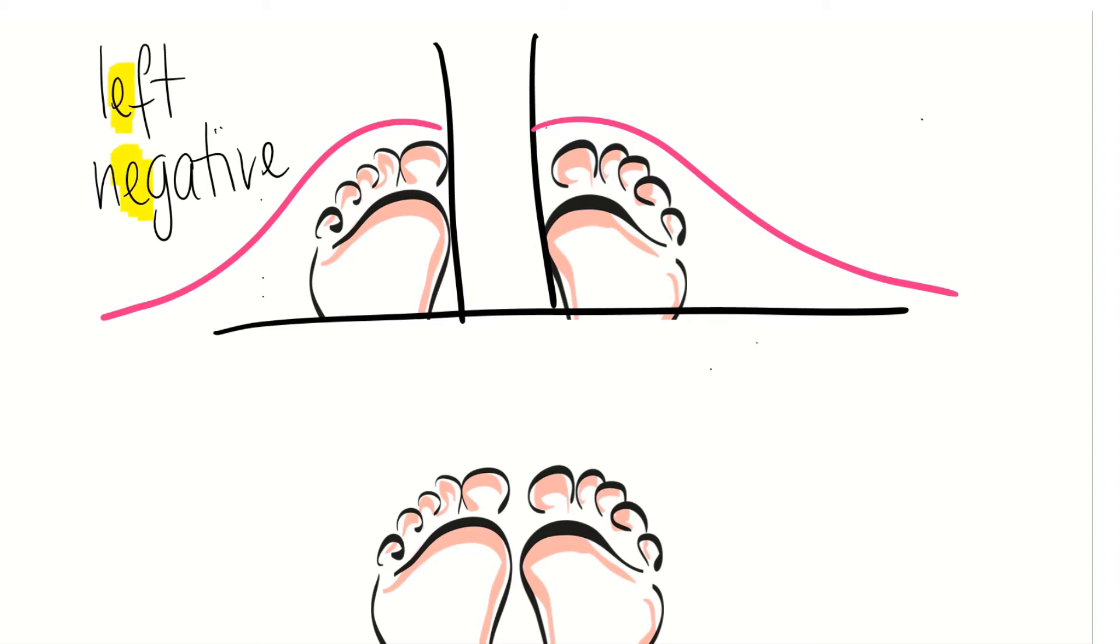Our right foot is now a positive skew. As you can see, there is an I in right and also an I in positive.